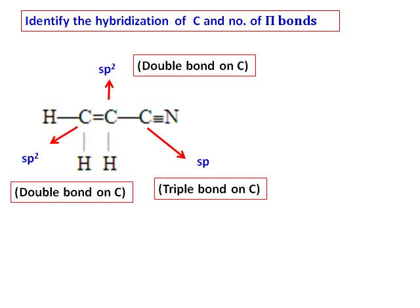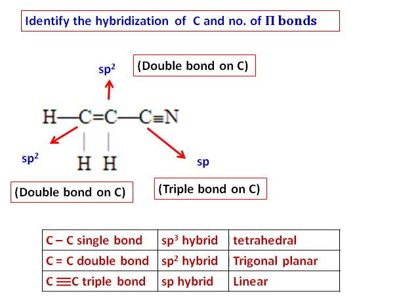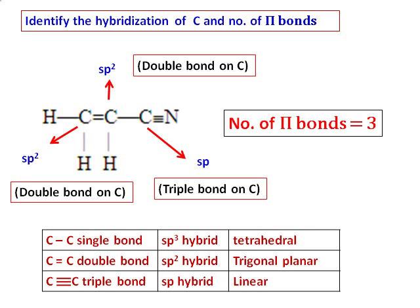Referring to the table: a carbon with a single bond is sp3, a double bond gives sp2, and a triple bond gives sp hybridization. For counting pi bonds: the triple bond contributes 2 pi bonds, and the double bond contributes 1 pi bond, giving a total of 3 pi bonds in the compound.